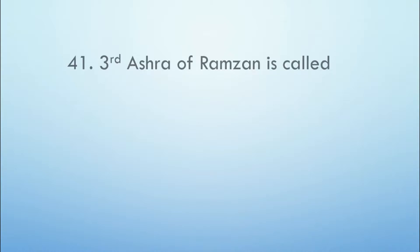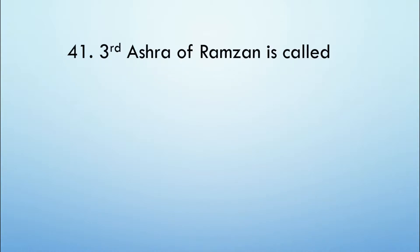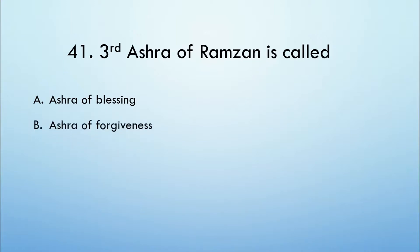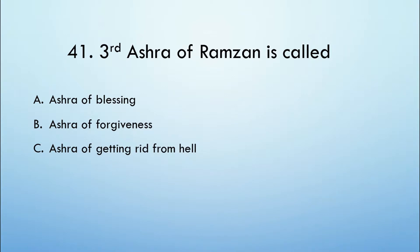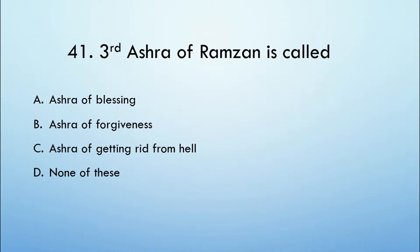Third Ashra of Ramzan is called: Ashra of Blessing, Ashra of Forgiveness, Ashra of Getting Rid from Hell, or None of these? And the correct option is Option C, Ashra of Getting Rid from Hell.